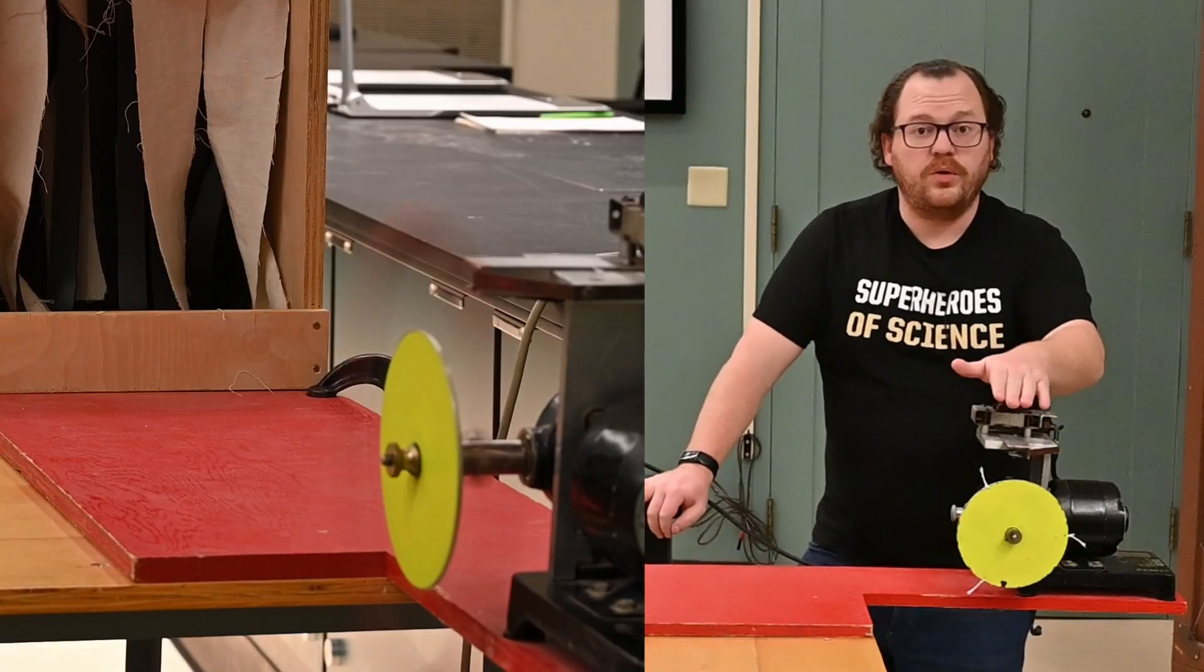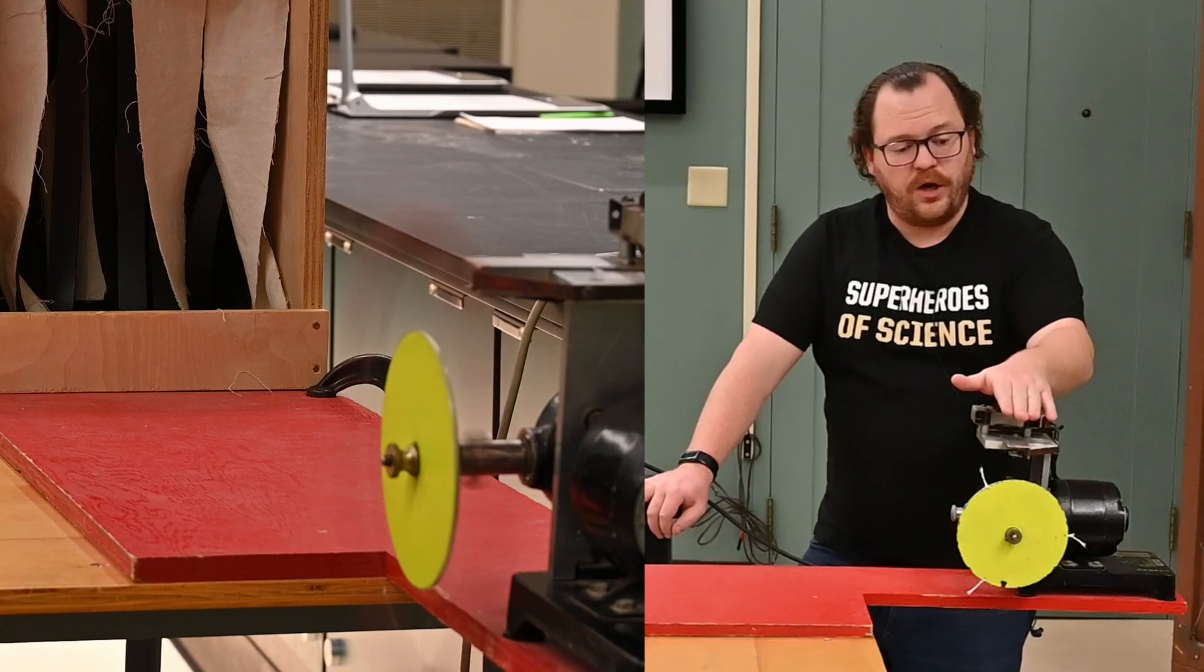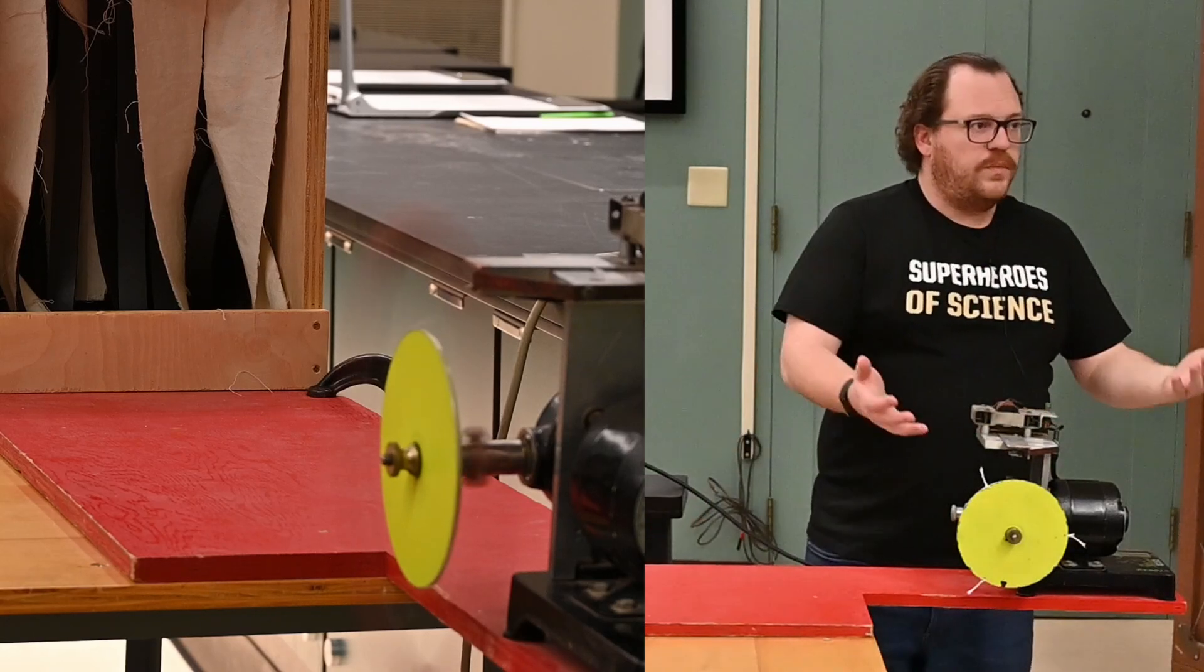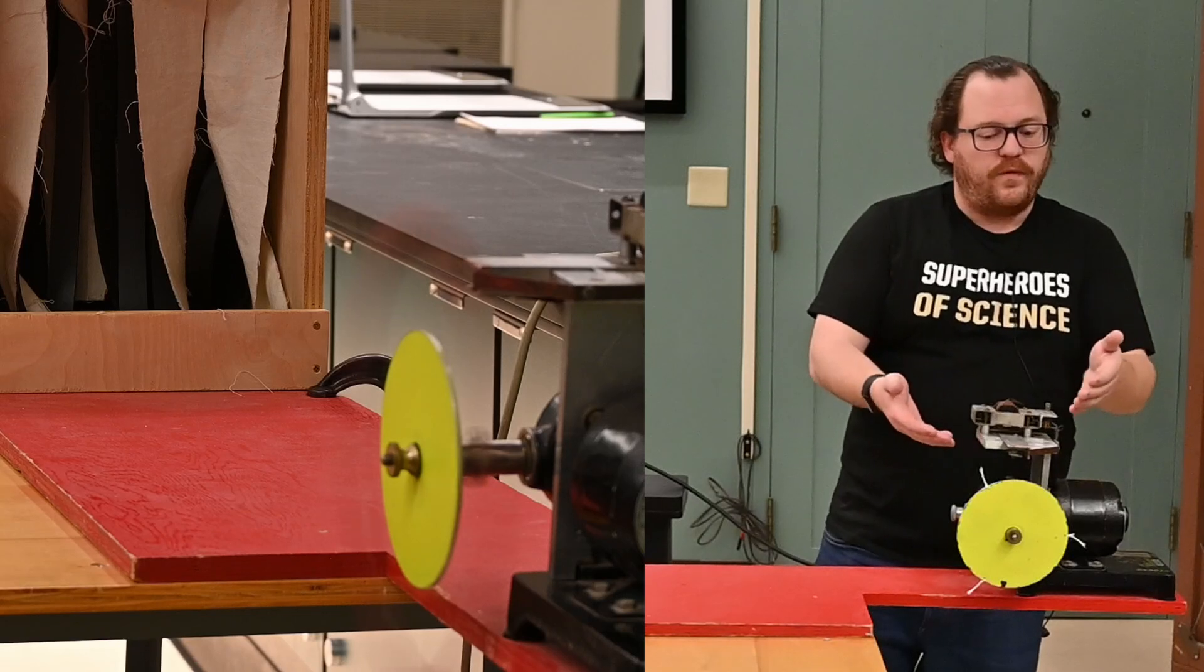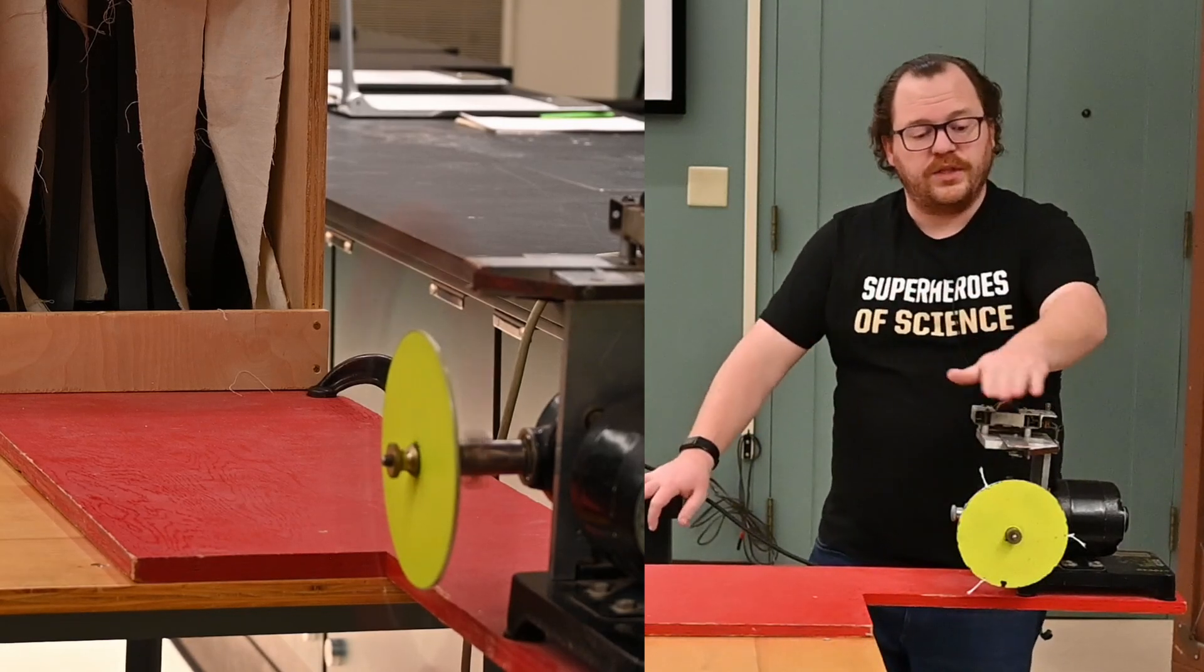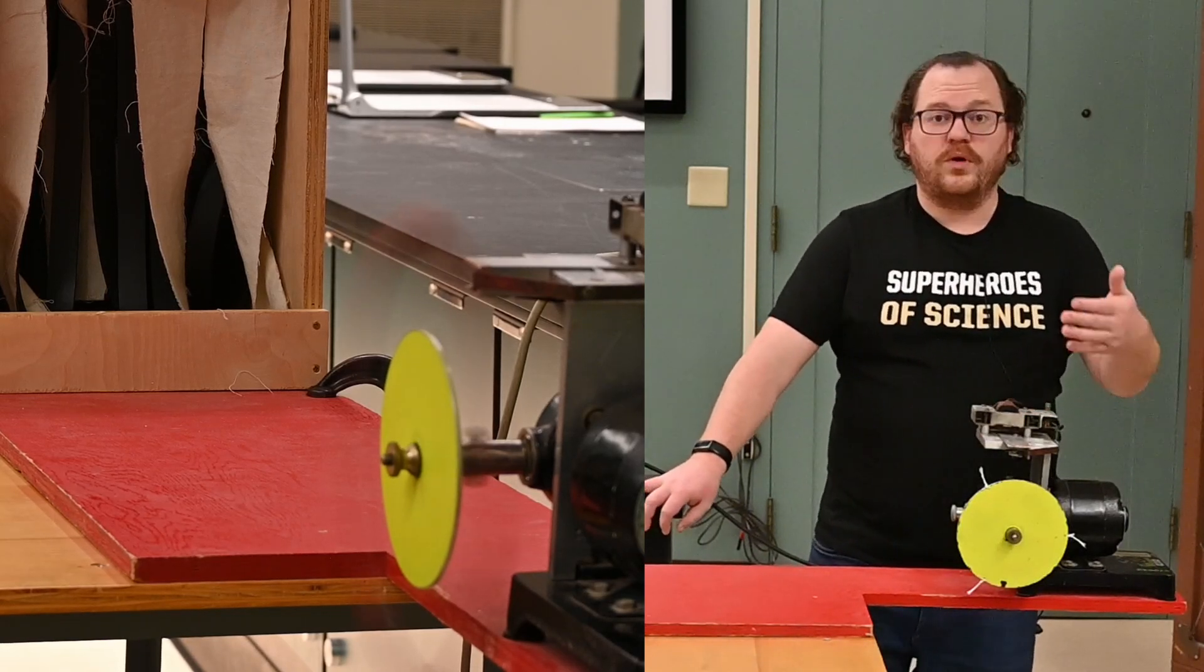When we cut the string there is no longer a centripetal force acting on it and so they were being spun in a circle by that centripetal force, by the tension in the string. With the string cut, no more centripetal force, no more tension.